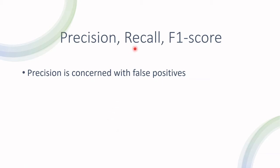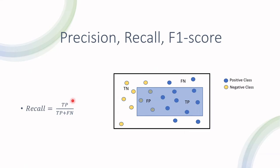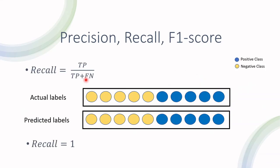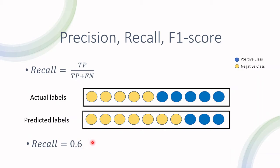Recall is more concerned with false negatives. Recall is defined as true positives divided by true positives and the falsely predicted negatives. Again, if everything is predicted correctly, the recall is equal to one. If two instances of the negative class are falsely predicted as positive, that doesn't affect recall because recall is more concerned with false negatives. But if there are two false negatives, then the recall drops from one to 0.6.